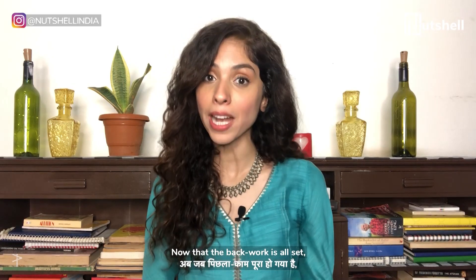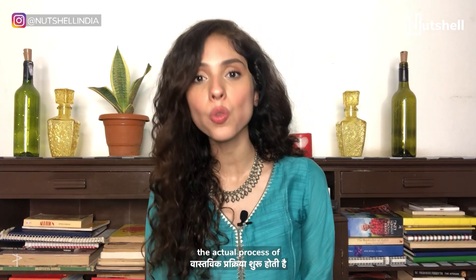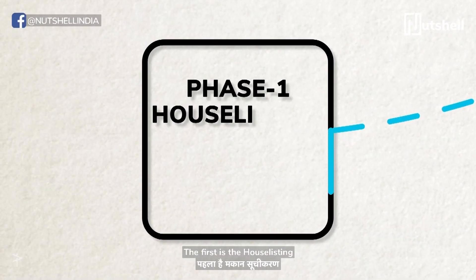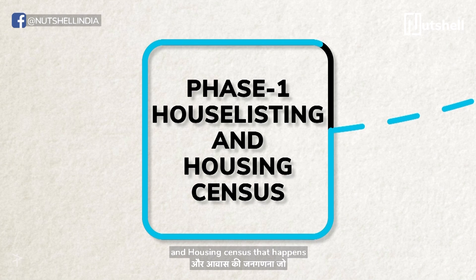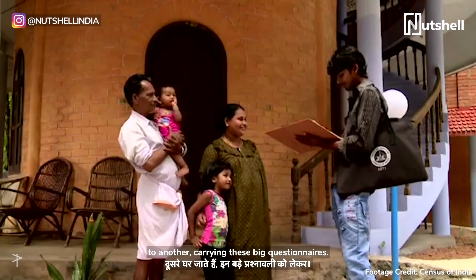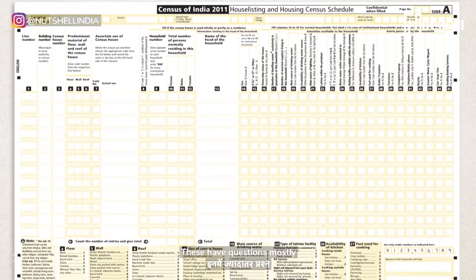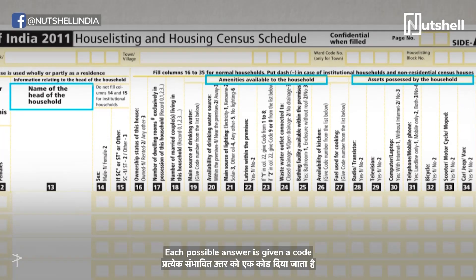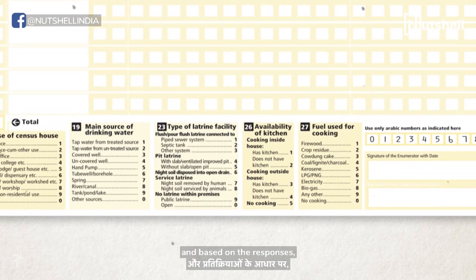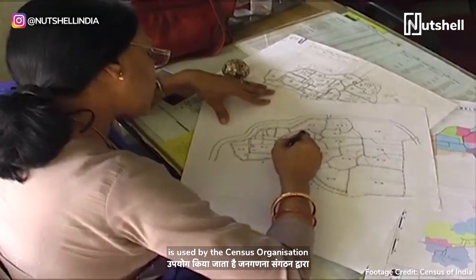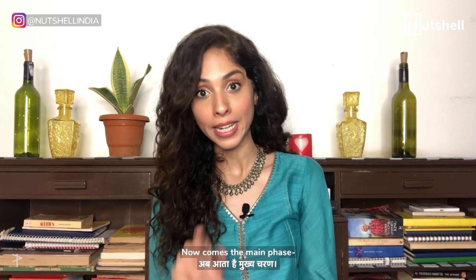Now that the back work is all set, the actual process of collecting data begins. This happens in two phases. The first is the house listing and housing census, which takes place between April and September. Enumerators go from one house to another carrying large questionnaires with questions mostly about the house type, assets, and amenities. Each possible answer is given a code, and based on the responses the enumerators write in the code for the answers given. The data received in this phase is used by the census organization to further update their maps.